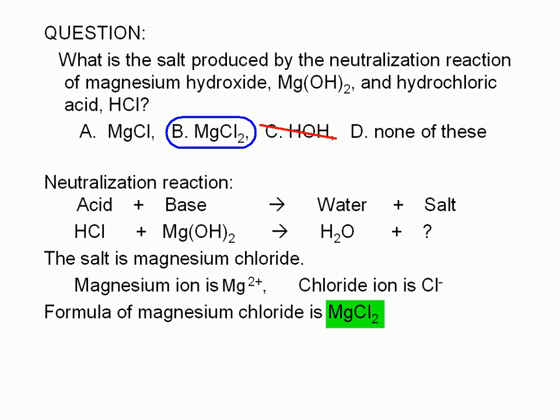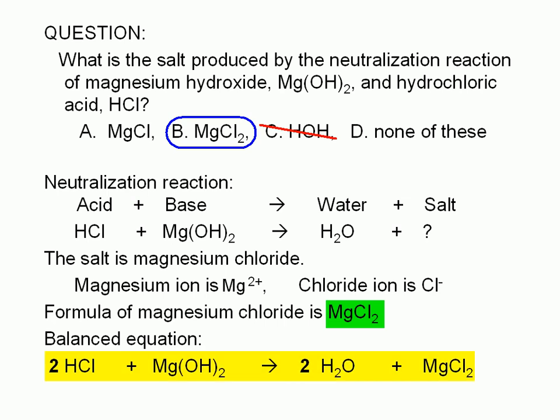Magnesium chloride is a salt. Here is the balanced chemical equation for this reaction. An acid-base neutralization reaction is classified as a double replacement reaction.